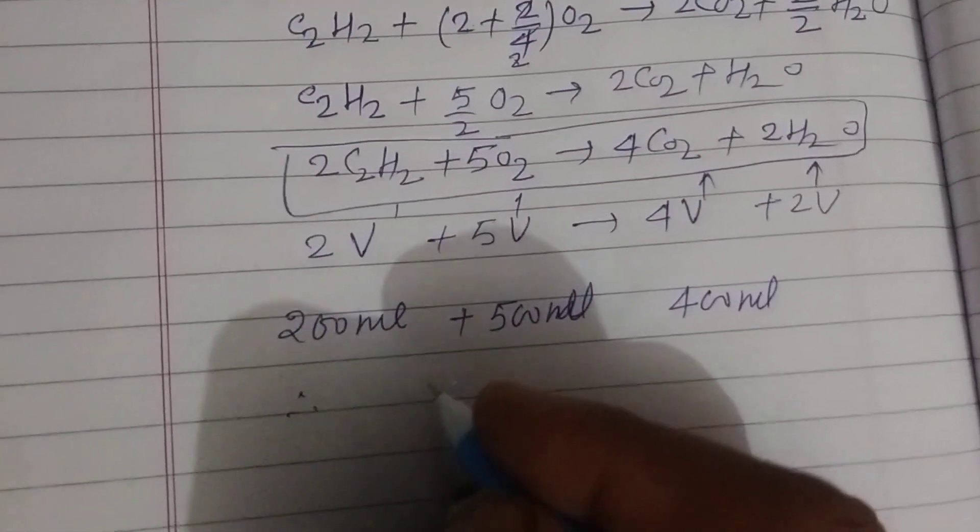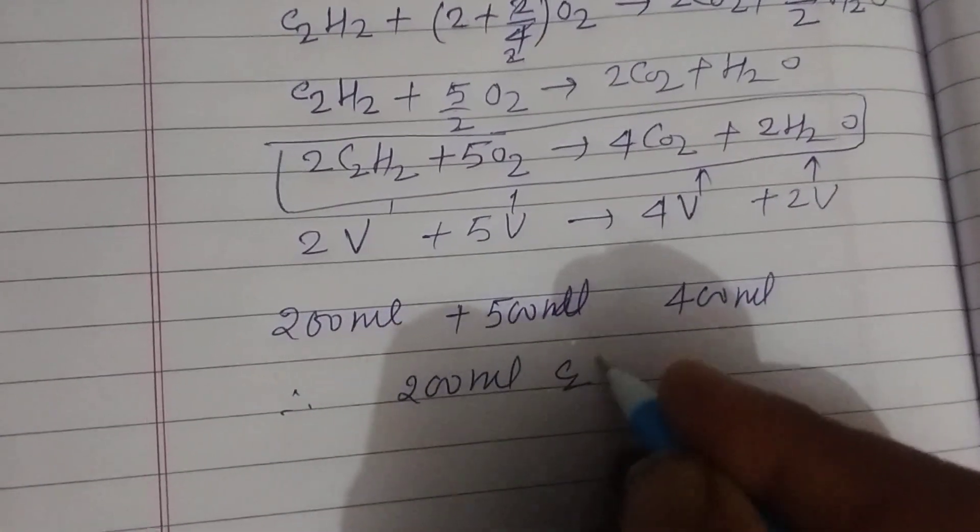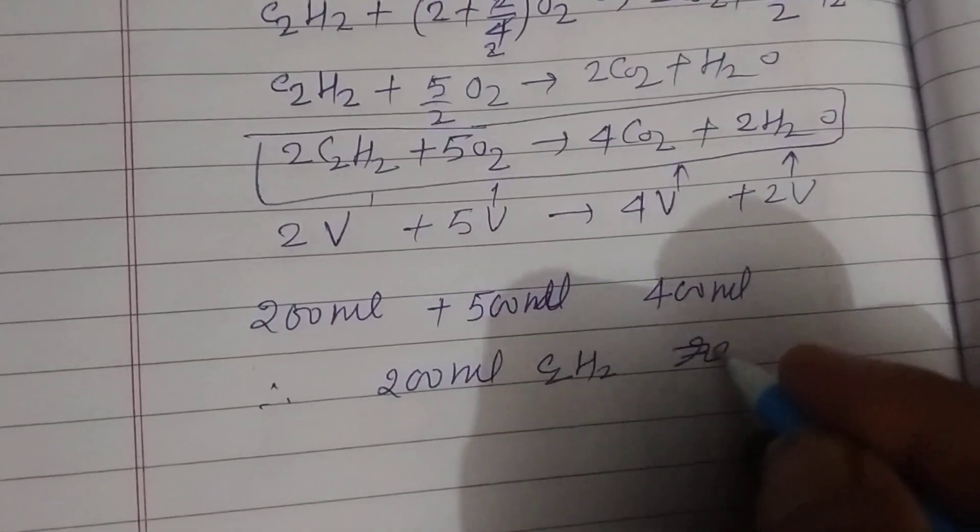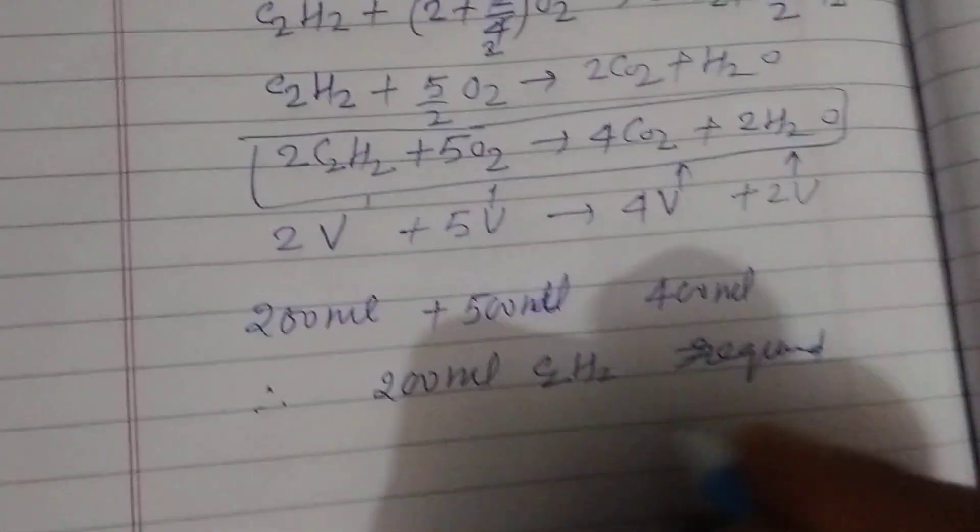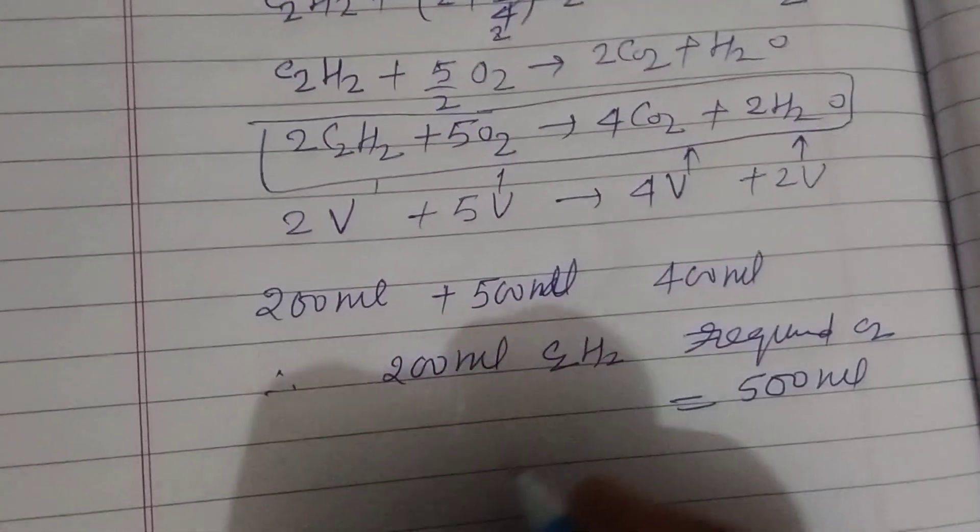Therefore, 200 mL C2H2 requires oxygen. How much? This is 500 mL to burn.